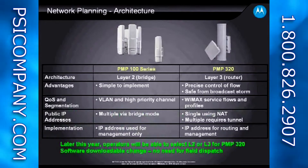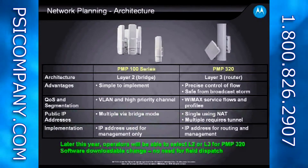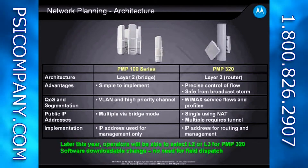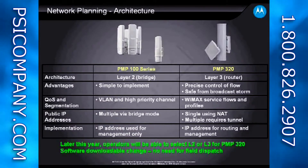The traditional PMP products operate at Layer 2, meaning the access point and the subscriber module both operate as bridges. The PMP320 operates at Layer 3, sometimes referred to as IP Convergent Sublayer, meaning the access point acts as a router and the subscriber module acts as a NAT device. There are advantages and disadvantages to both Layer 2 and Layer 3 approaches.